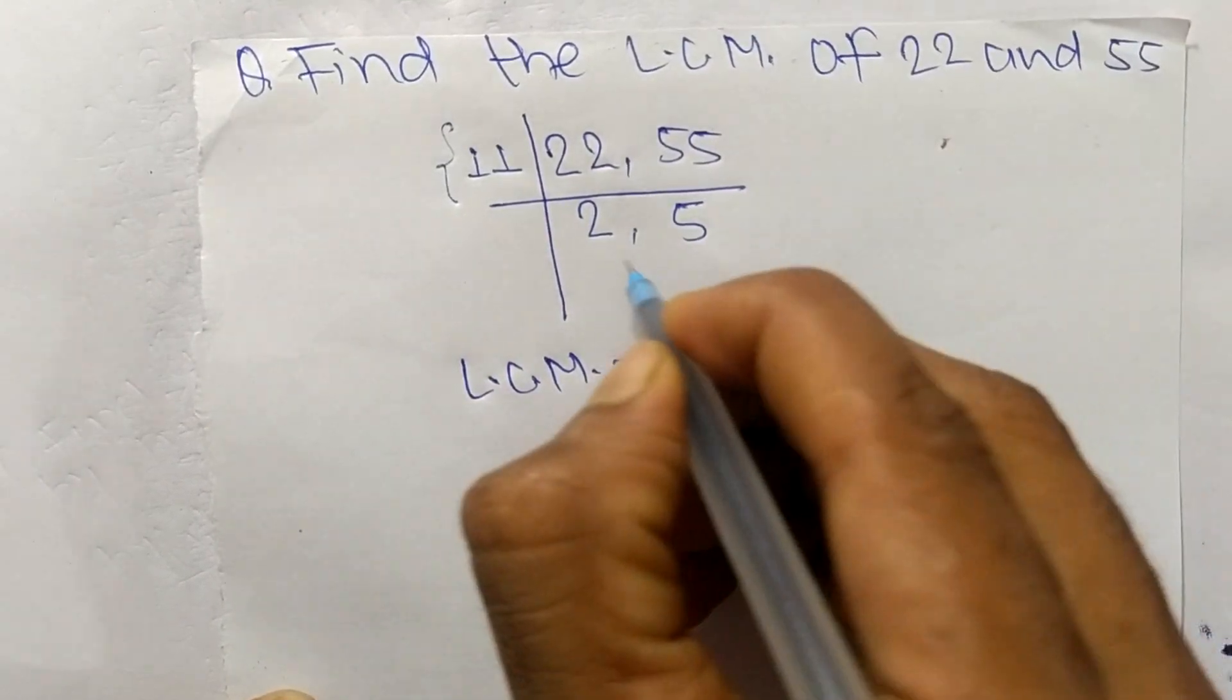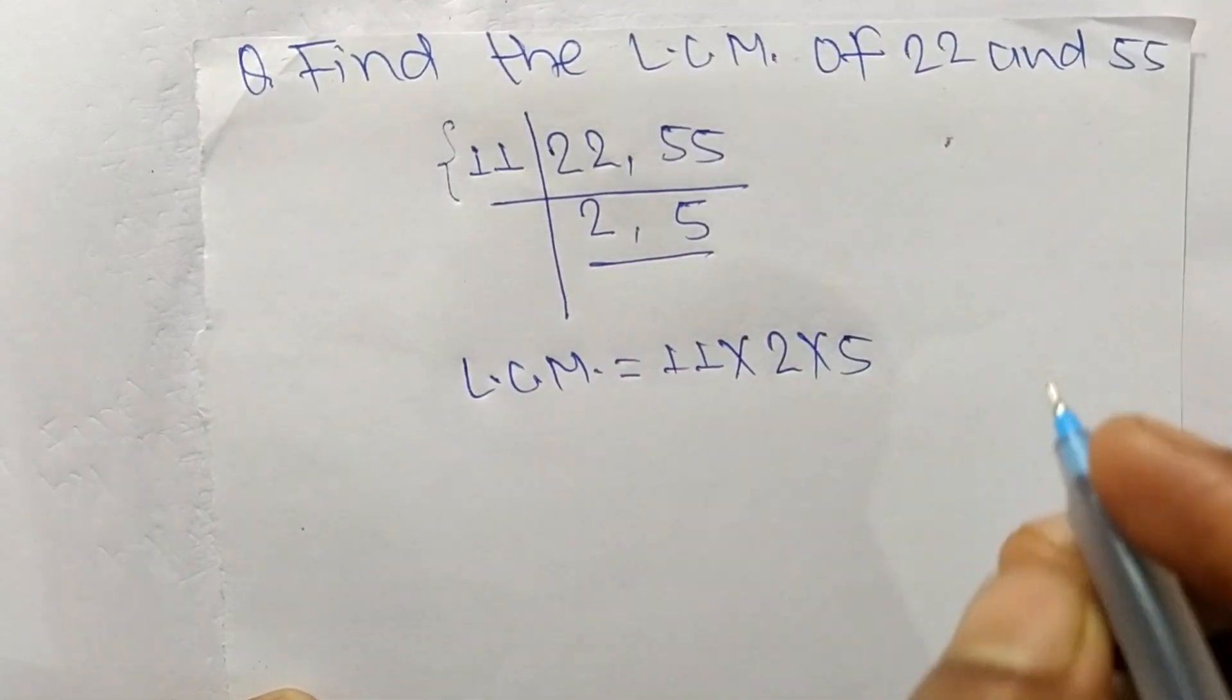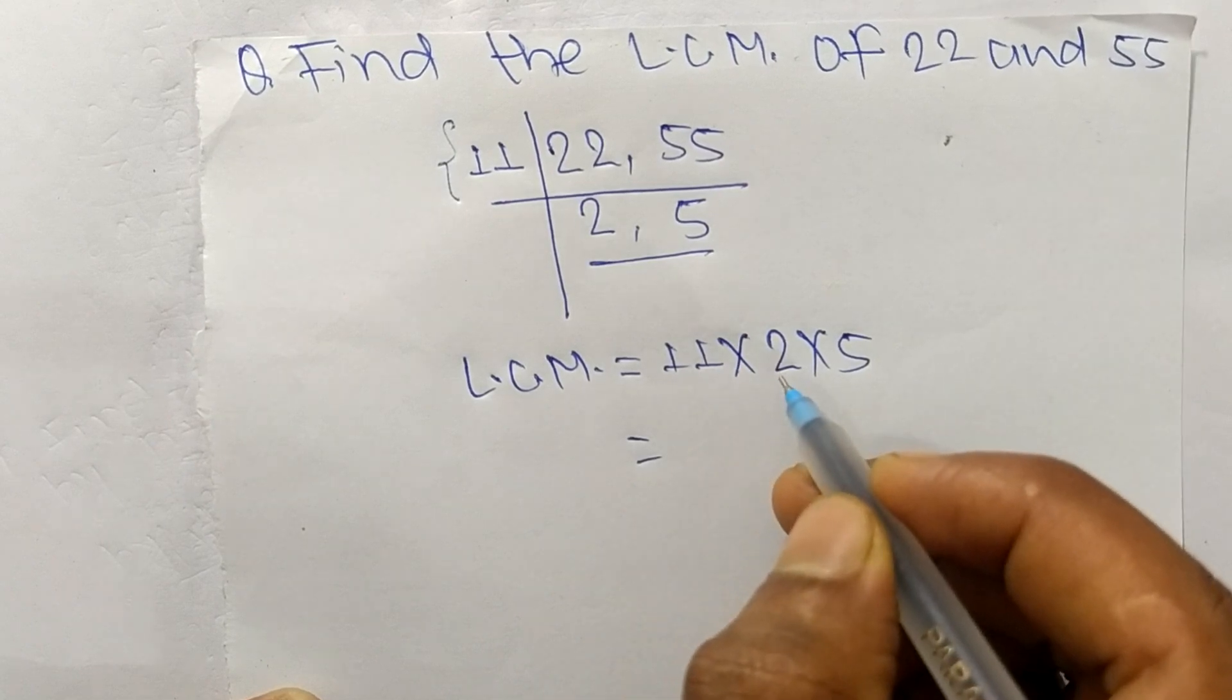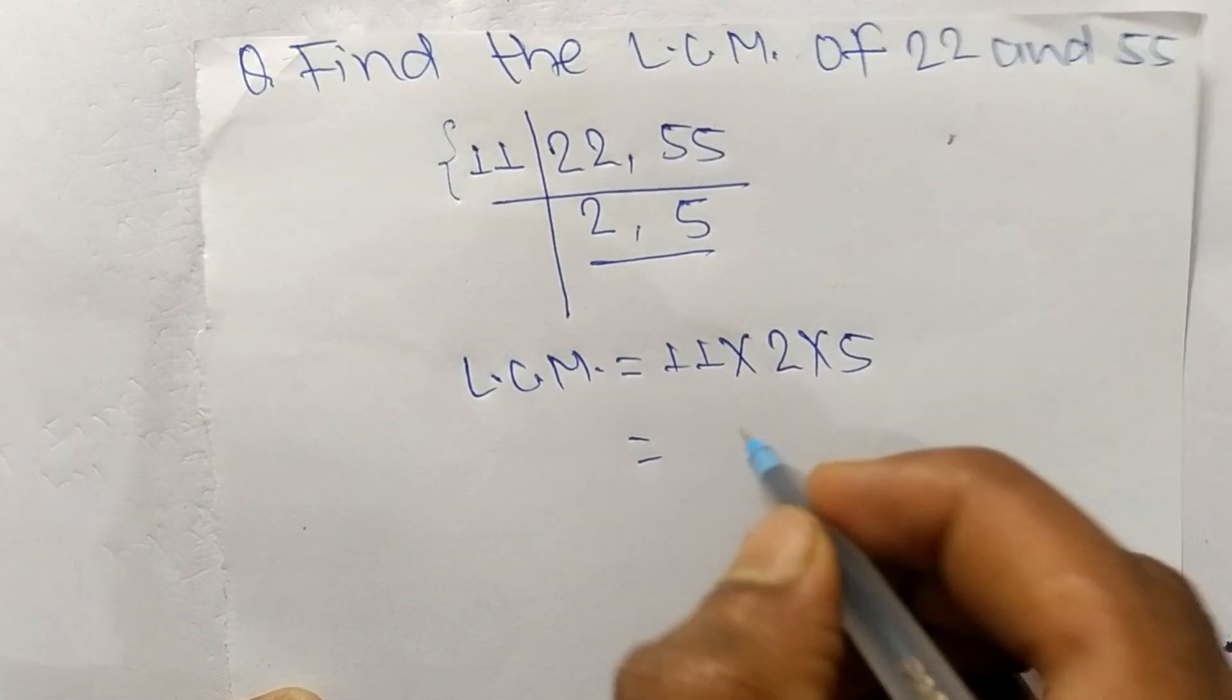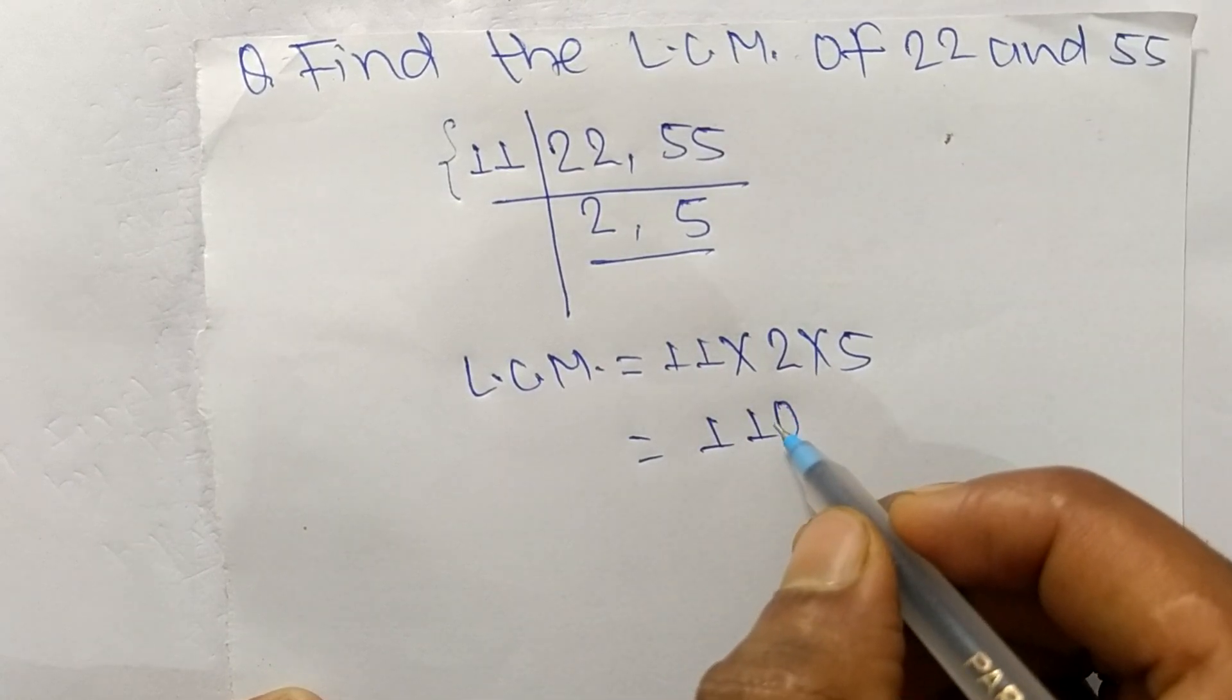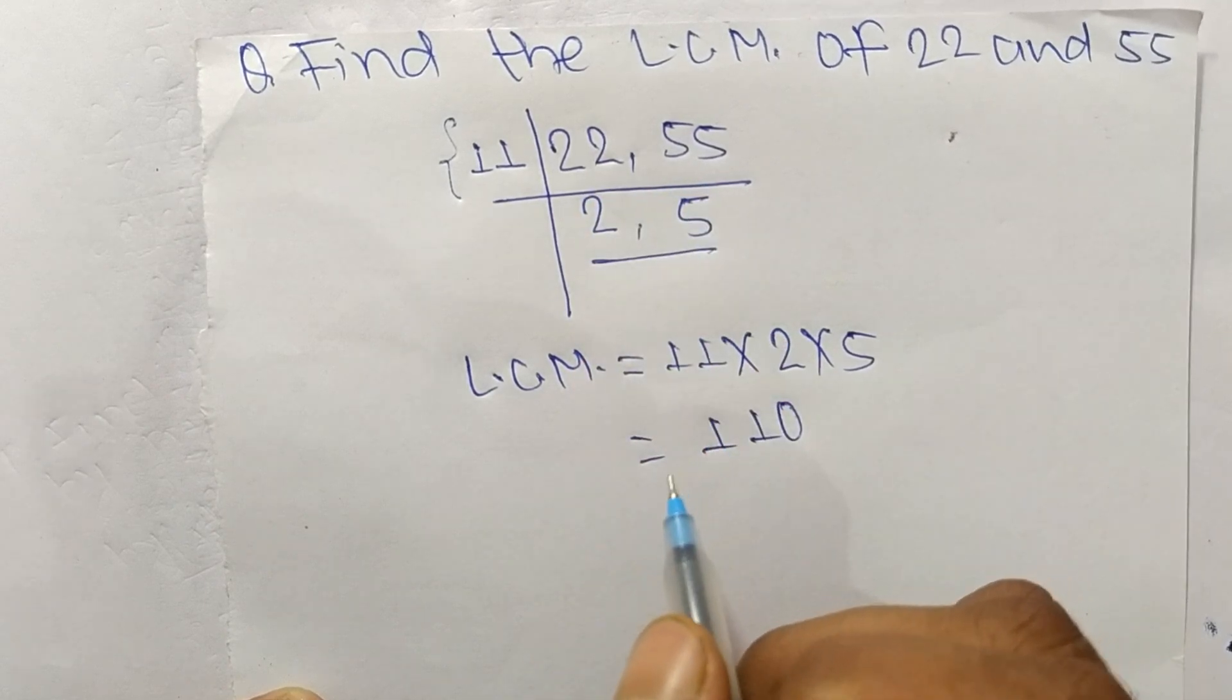is 11, and from this part it is 2 times 5. So it is equal to 11 times 2, which means 22, and 22 times 5 means 110. So 110 is the LCM of 22 and 55.